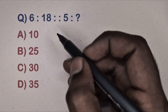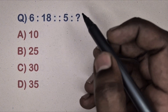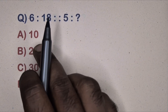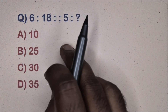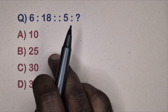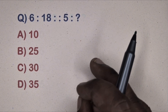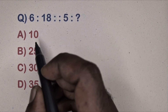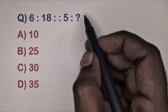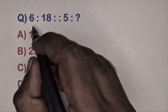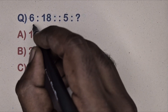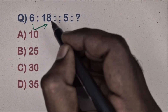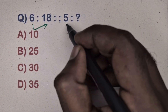Hi friends, in this video we will learn about different types of analogy questions and their properties. Please watch the full video, don't skip. Let's go to question 1: 6 is related to 18 — why? Find the relation.